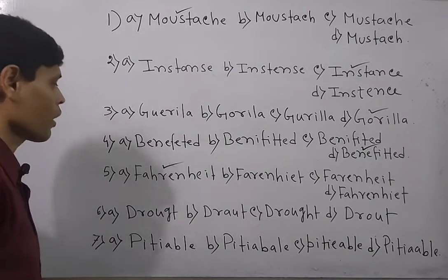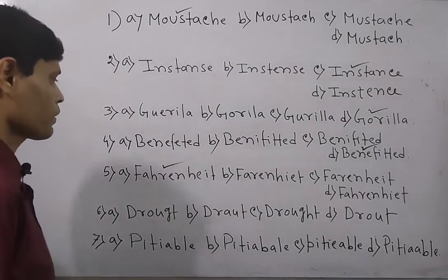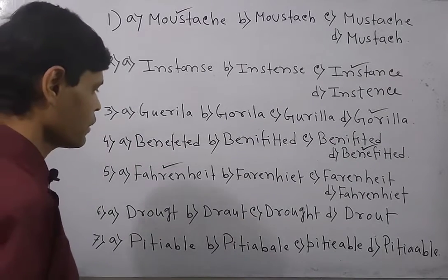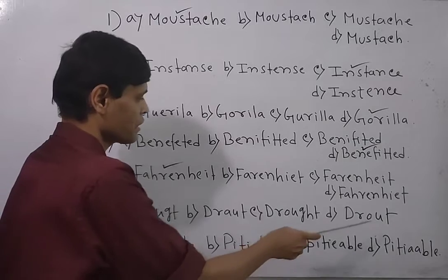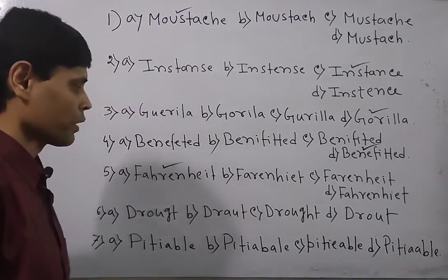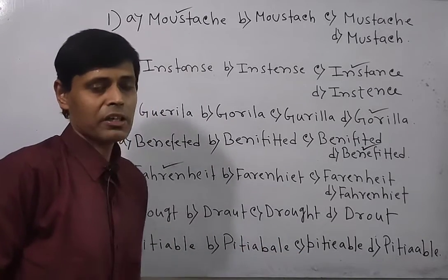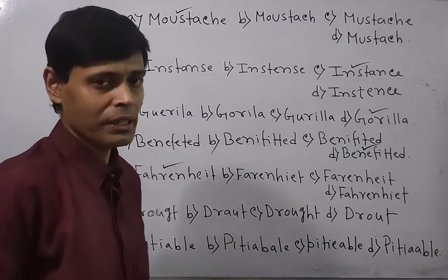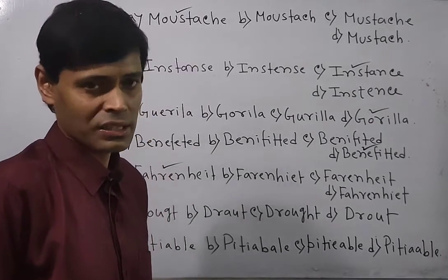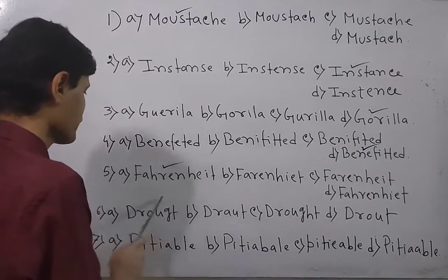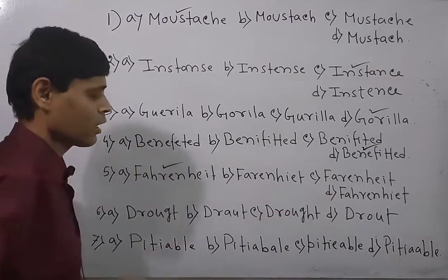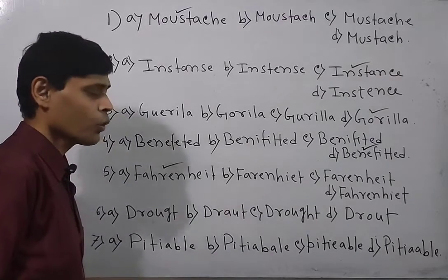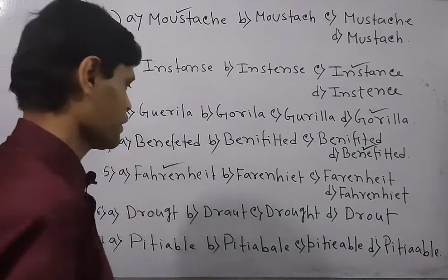Now look at the next question — the word is DROUGHT. The options are: first D-R-O-U-G-S-T, second D-R-A-U-T, third D-R-O-U-G-H-T, fourth D-R-O-U-T. The exact spelling of drought is D-R-O-U-G-H-T. The first, second, and fourth spellings are eliminated, and option C — D-R-O-U-G-H-T — will be the answer.